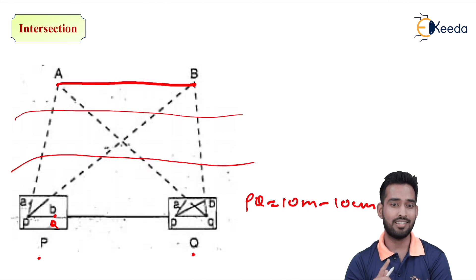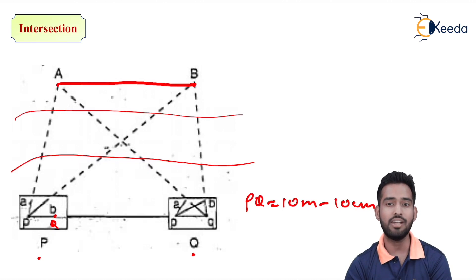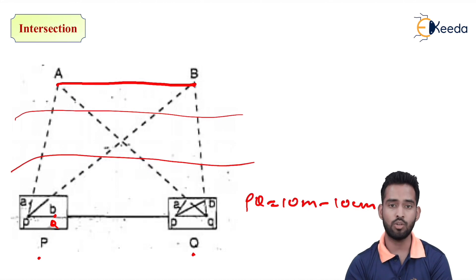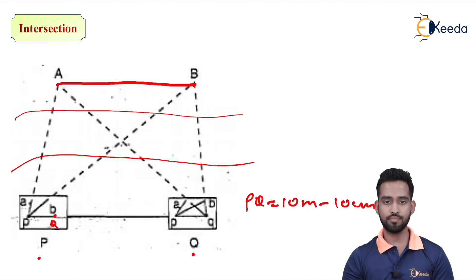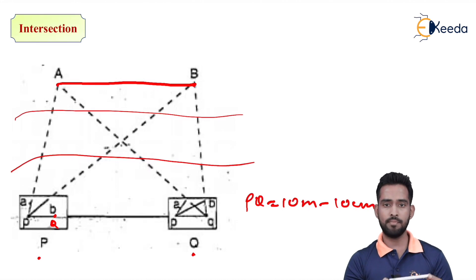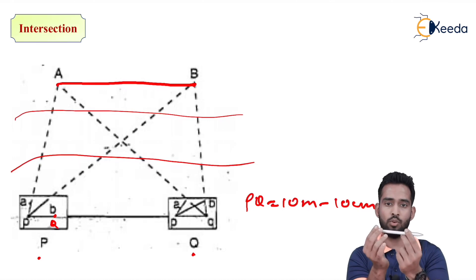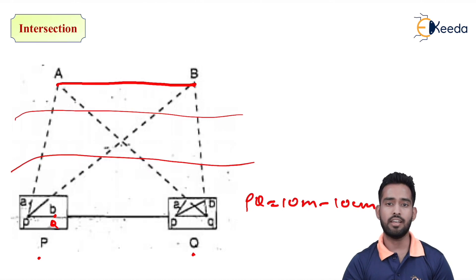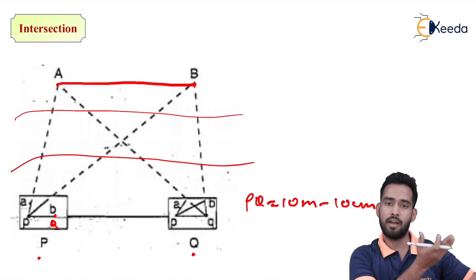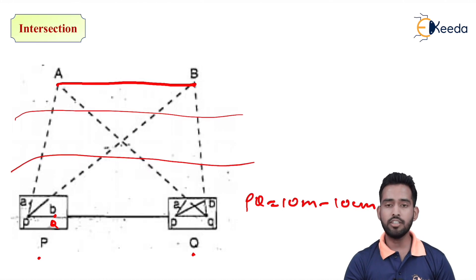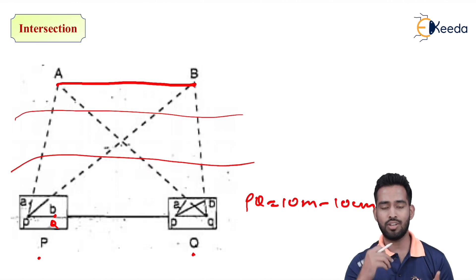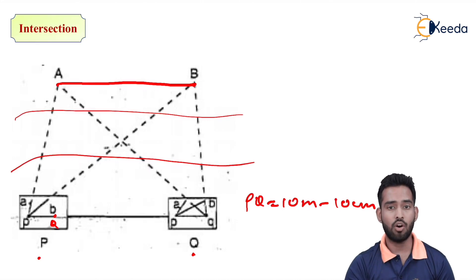Now we are at Q, and as the rule says, we have to do orientation. Orientation can be done by using the back-sighting method or the magnetic line method. In this case, we use the back-sighting method. From Q, referring to the line QP which was drawn from P, keep your alidade parallel to line QP and bisect the ranging rod at P from Q. Rotate the plane table until point P is exactly bisected from Q. Now the plane table is in the exact position as when occupied at station P. From Q, bisect the ranging rod at A using the alidade and draw a ray towards it.